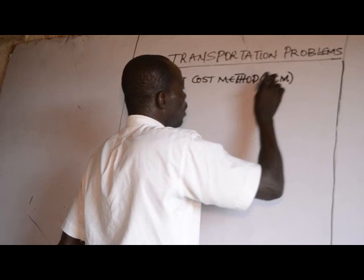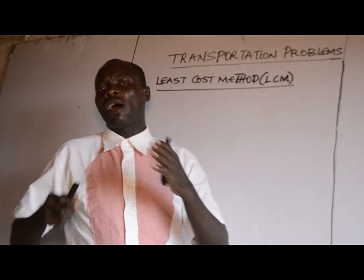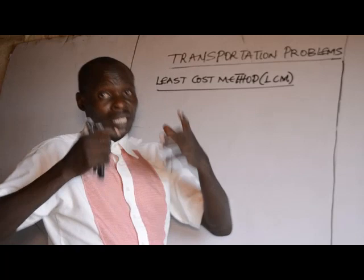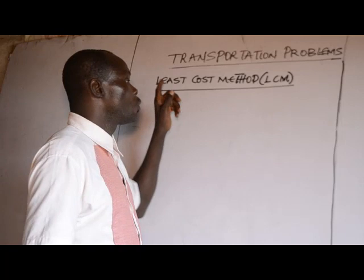In this method, the cheapest route is always the focus for allocation. That is, our target is to allocate to the least cost — the cheapest route. This method is a better method when compared to the North West Corner method.